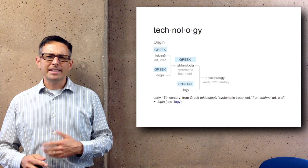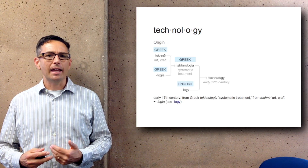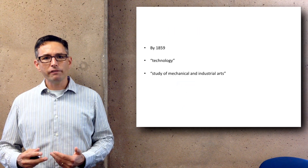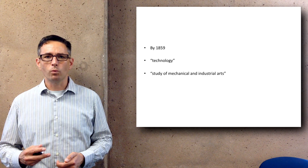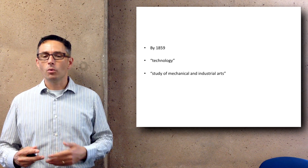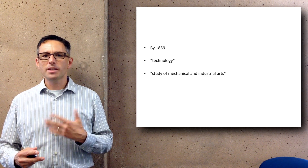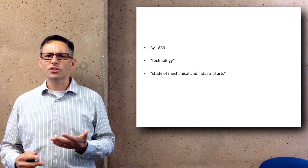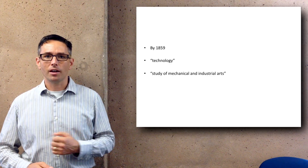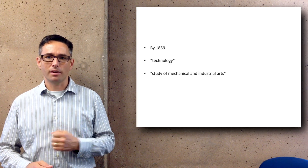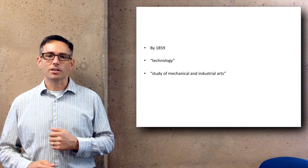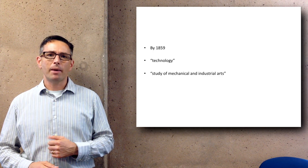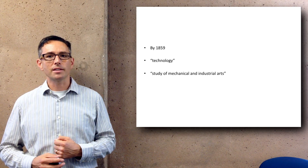That's not exactly how we think of it today. As you look at the ways in which it's been used over time, by about 1859 the word technology had taken on more of the framing that we use today — specifically the study of mechanical or industrial arts, and increasingly information arts or data-driven technologies. So technology as a word has been changing over time, and about 1859 is when we started seeing it used the way we use it today.